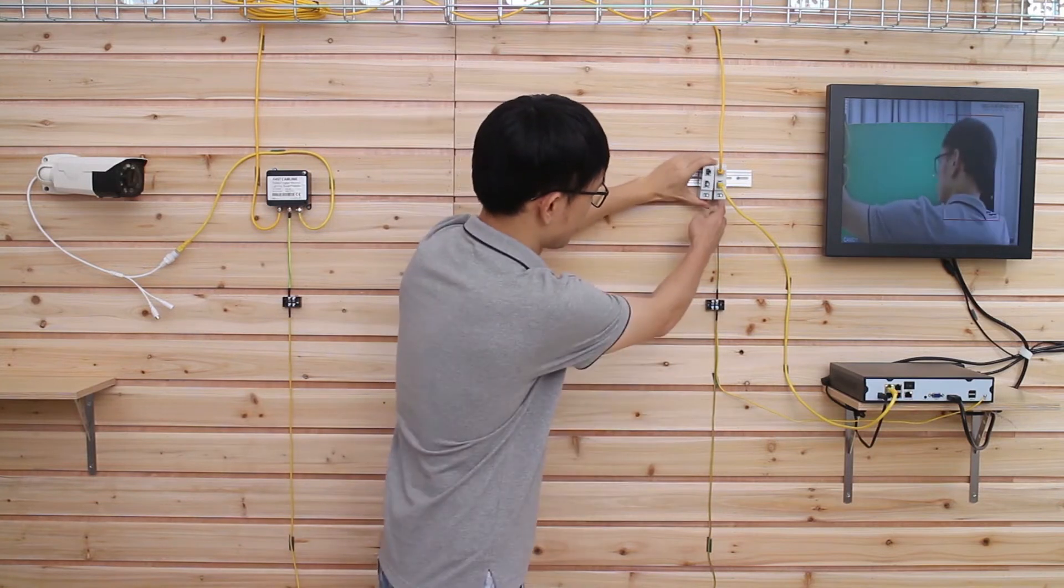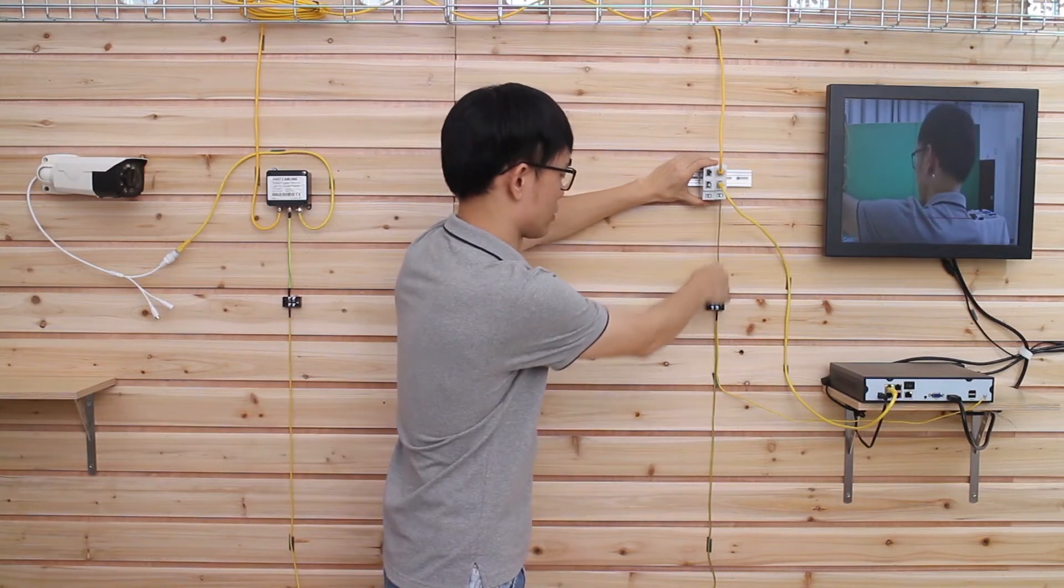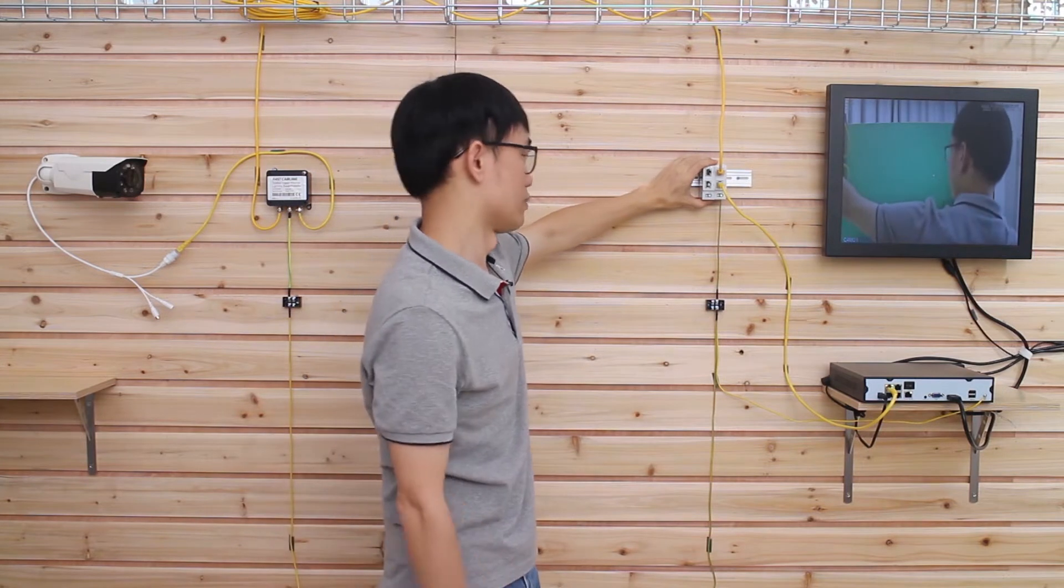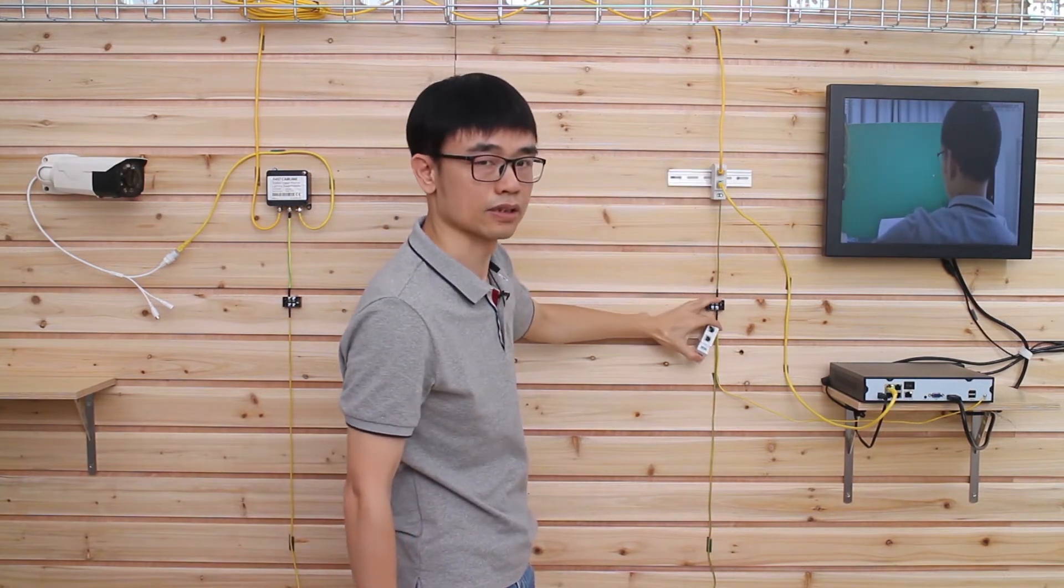You can also change the grounding spot, so you eventually just have one surge path from multiple surge protectors to the grounding spot.